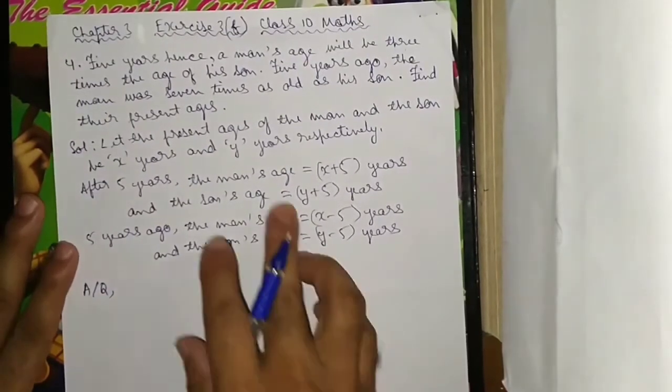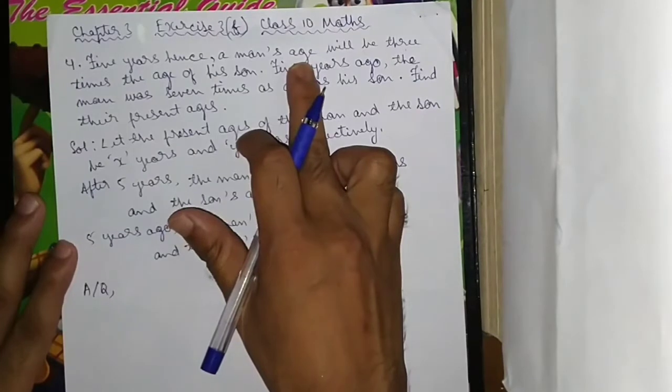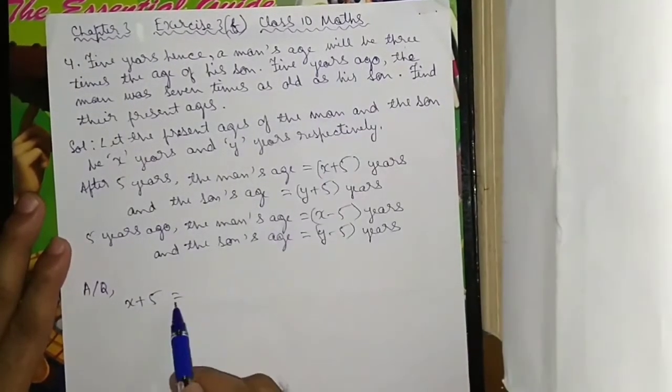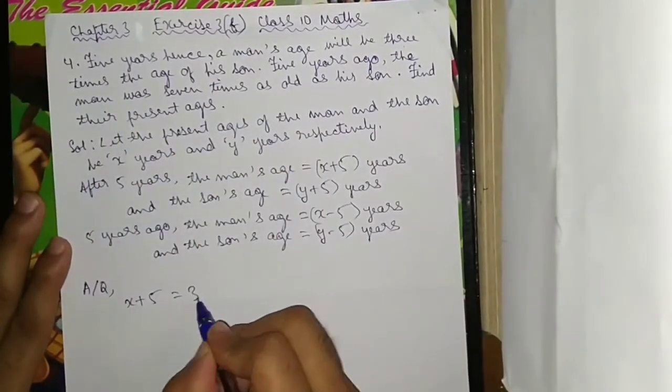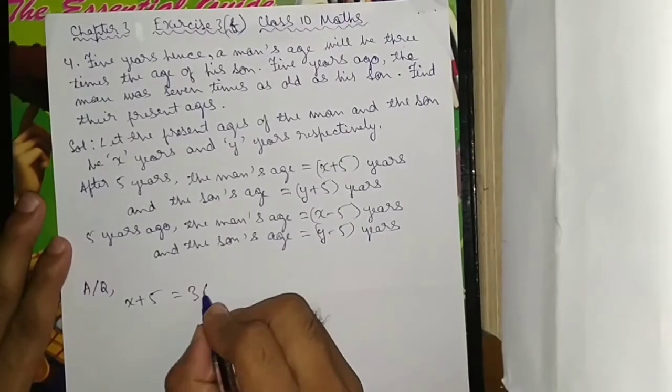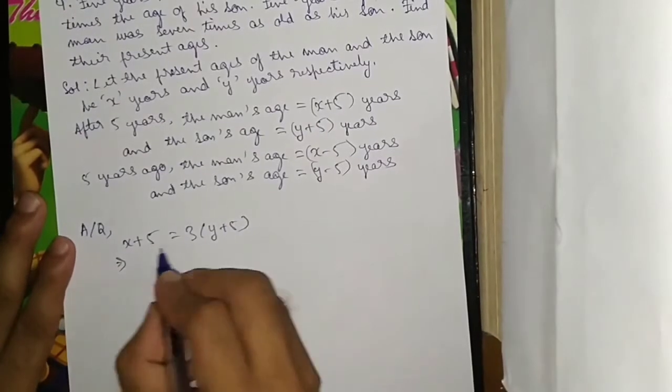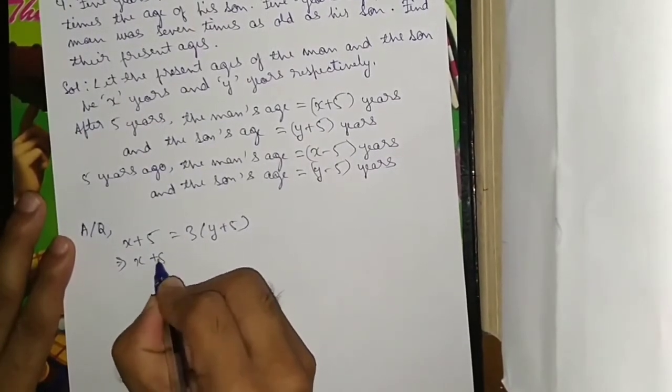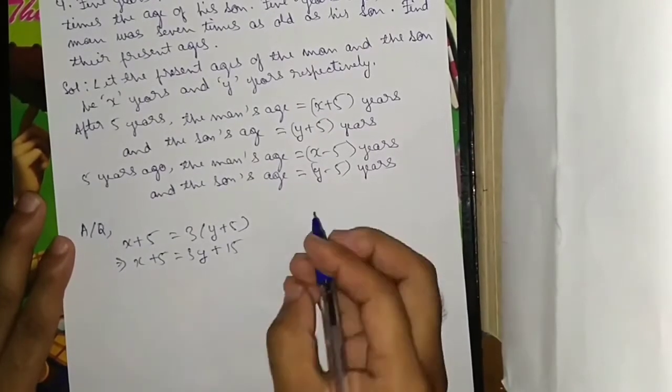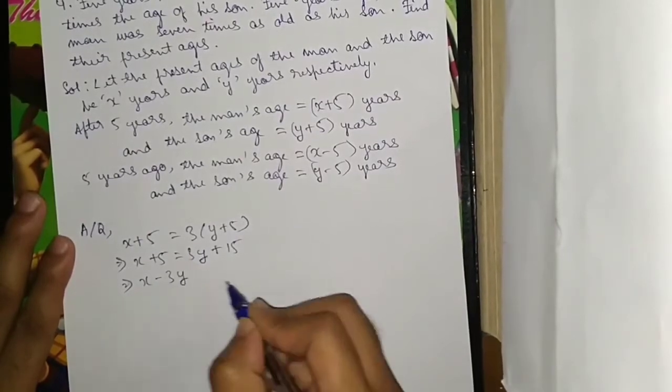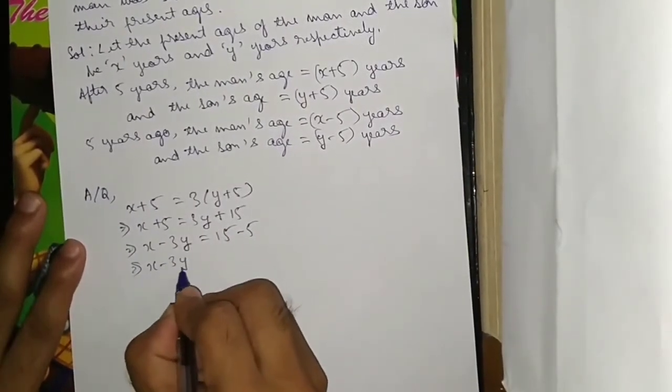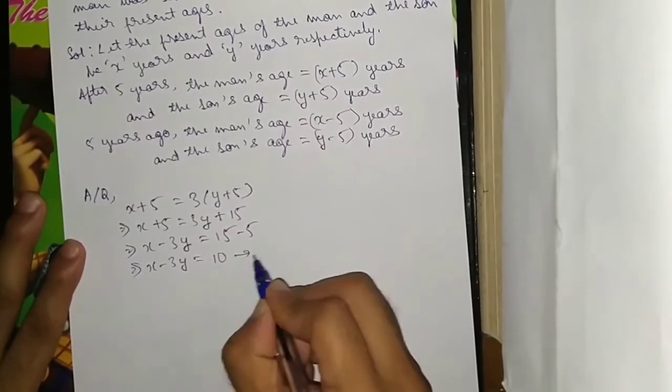According to the question, X plus 5 equals 3 times Y plus 5, which gives X plus 5 equals 3Y plus 15. This implies X minus 3Y equals 15 minus 5, which is 10. This is equation 1.